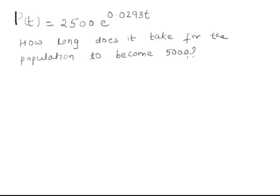Here the population itself is given to you as 5000, so I'll just substitute or replace this P(t) or the population as 5000. So replacing P(t) as 5000, this is equal to 2500 e raised to 0.0293 times t.